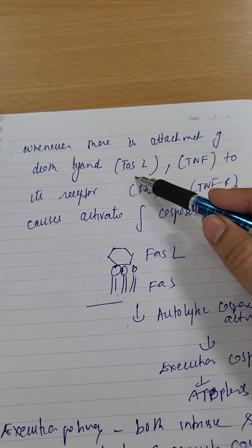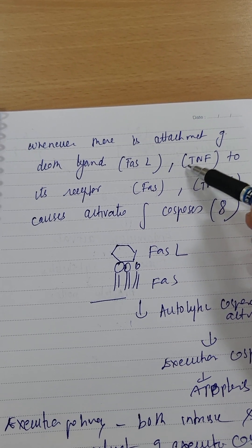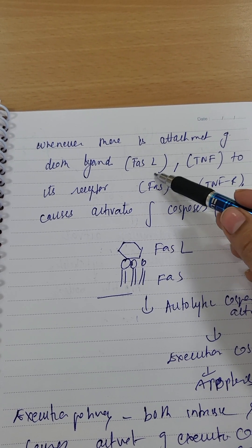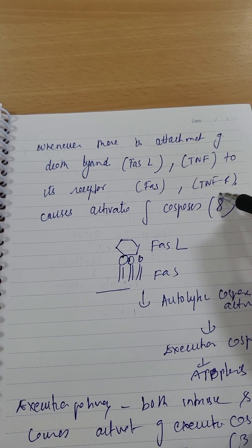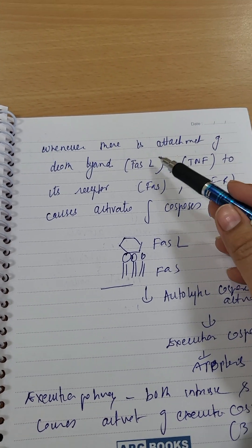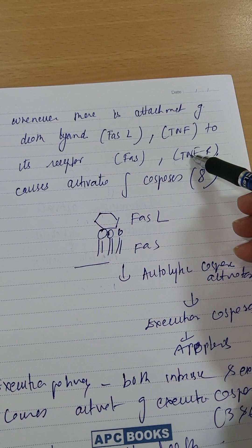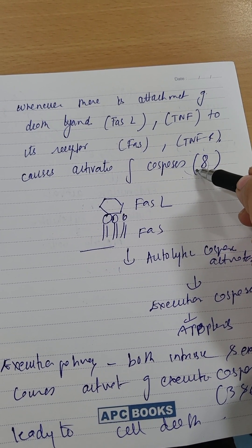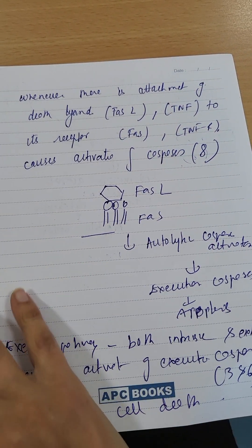Whenever there is attachment of a death ligand like FAS ligand or TNF to its receptor, FAS or TNFR, when there is attachment of death ligand to its receptor, it causes activation of caspase. In this case, 8 is activation in extrinsic and intrinsic is 9.